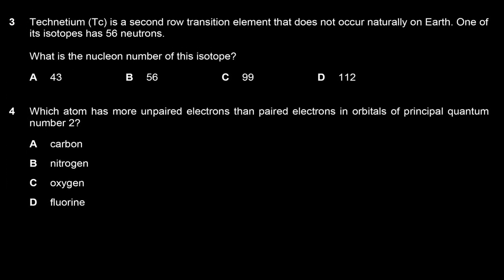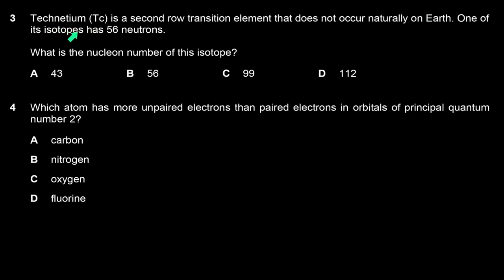Technetium is a second row transition element. One of its isotopes has 56 neutrons. What is the nucleon number? Technetium has atomic number 43, so this isotope has 43 protons and 56 neutrons. The nucleon number (mass number) is protons plus neutrons: 43 + 56 = 99. The answer is C — this isotope has 99 nucleons.